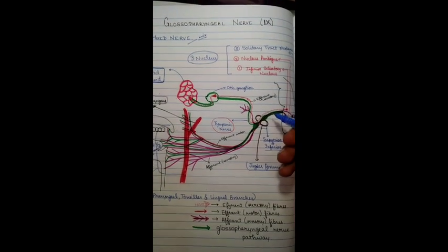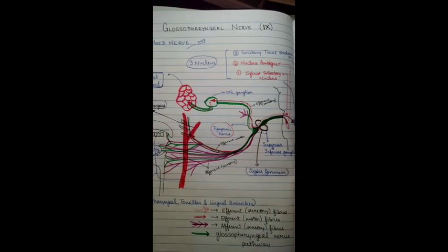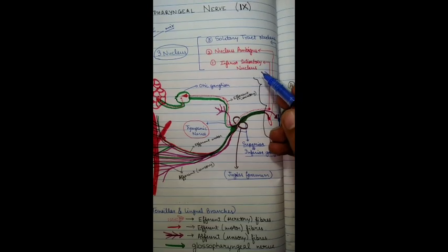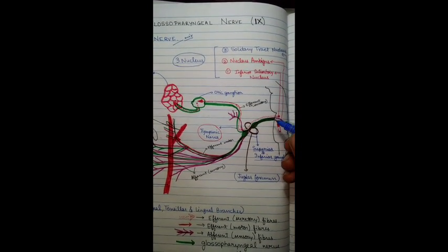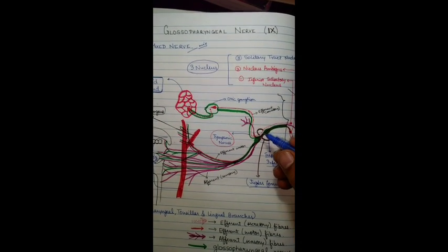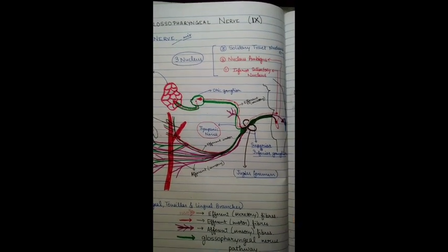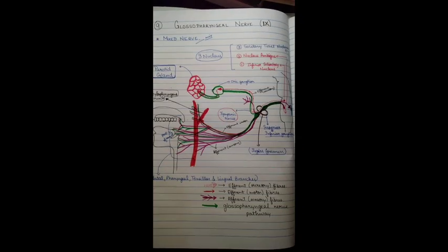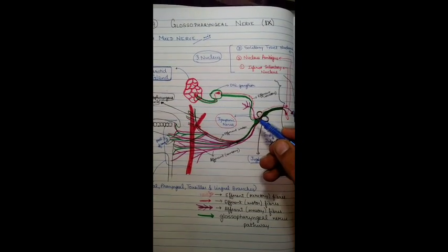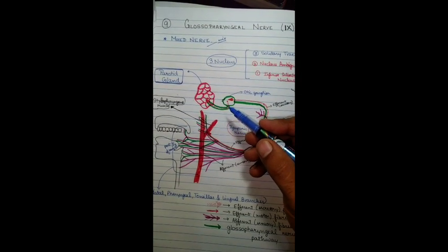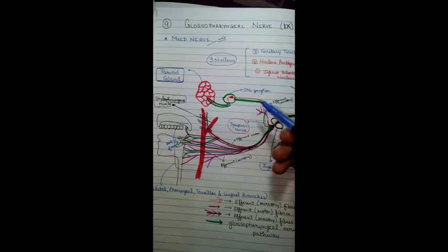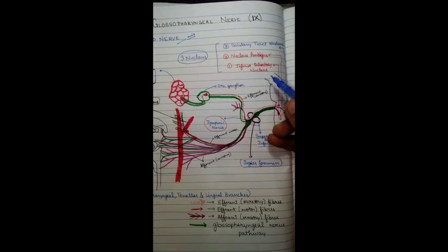The efferent secretory fibers will start from the inferior salivatory nucleus, which is the first nucleus of the glossopharyngeal nerve. They will leave the brain cavity through the jugular foramen, go along with the tympanic nerve up to the otic ganglion, and then innervate the parotid glands.